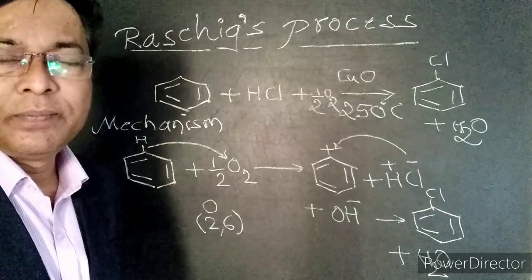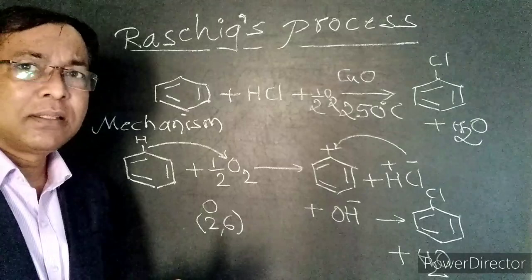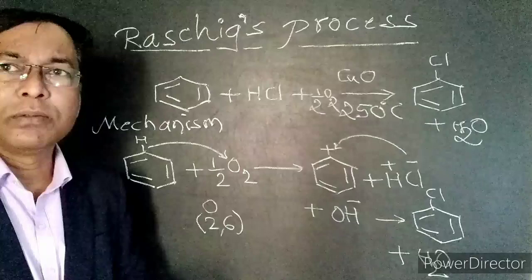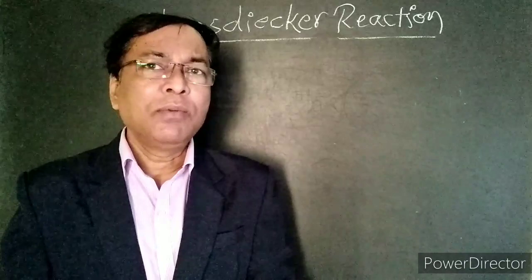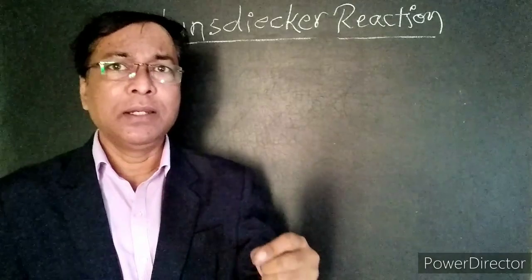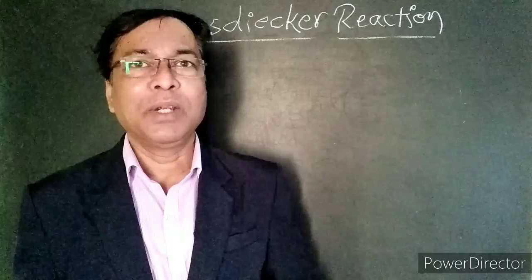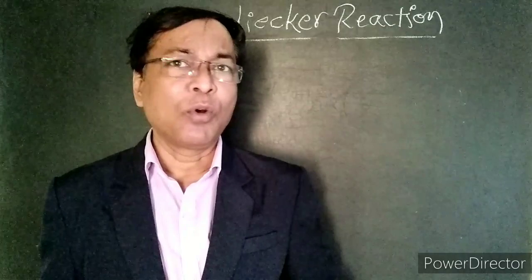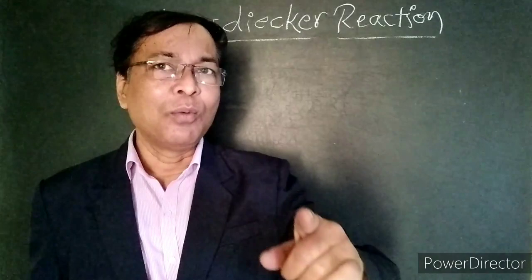Now we will go for the next method of preparation — Hans Diaser's reaction for the preparation of halobenzene. Hans Diaser's reaction: When the silver salt of an aromatic acid is heated with bromine in xylene solvent, we get aryl bromides, that is bromobenzene.